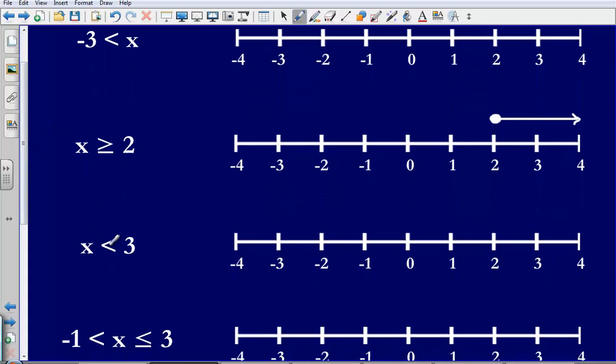Next we have x is smaller than 3. So x is smaller than 3, so this time it is going to be a hollow circle because it has not got the equals part as well. And now x is smaller than 3, so x could be any number going in this direction.